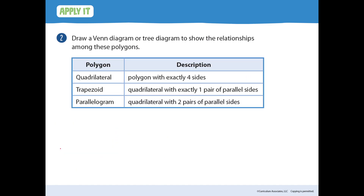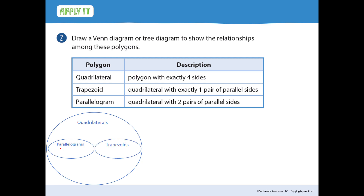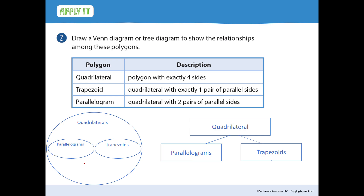Number two: draw a Venn diagram or a tree diagram to show the relationships among these polygons. Our three polygons are quadrilateral — a polygon with exactly four sides — trapezoid, a quadrilateral with exactly one pair of parallel sides, and parallelogram, a quadrilateral with two pairs of parallel sides. For the Venn diagram, quadrilateral is the most general category. Parallelograms and trapezoids are both kinds of quadrilateral but they don't overlap, because parallelograms have two pairs of parallel sides while trapezoids have exactly one pair. The tree diagram starts with quadrilateral, then parallelograms and trapezoids branch off.